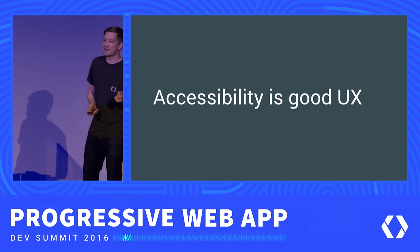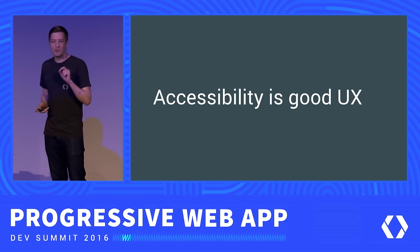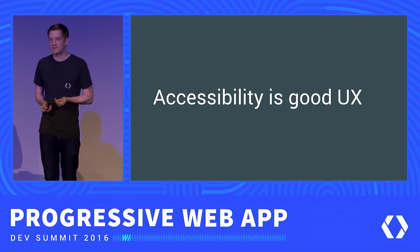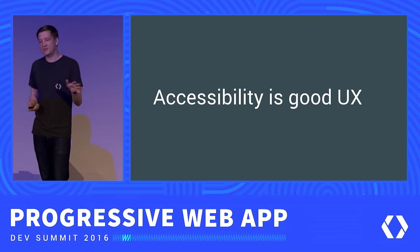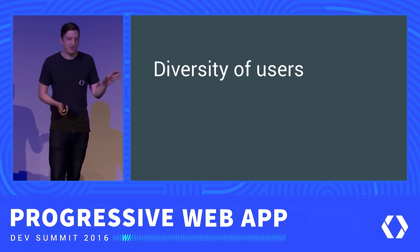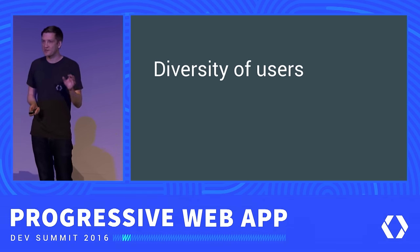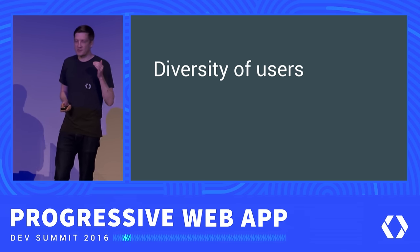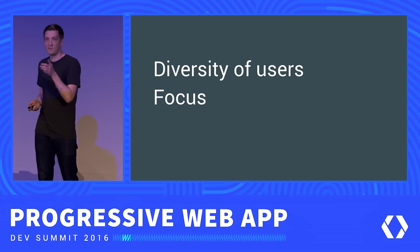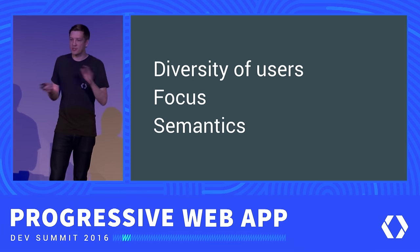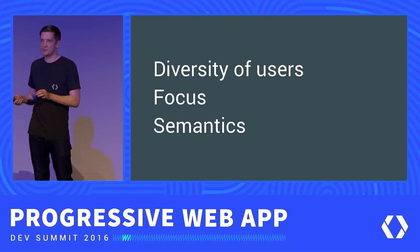Accessibility is just good UX. So this is what I want to talk about today. I'm going to split this talk into three parts. The first part is looking at the diversity of users that are out there and the accessibility topics that affect them. Then I want to look at two big areas developers often miss, particularly focused on focus and semantics. But I want to start by understanding who our users are and the kinds of assistive technology that they use.